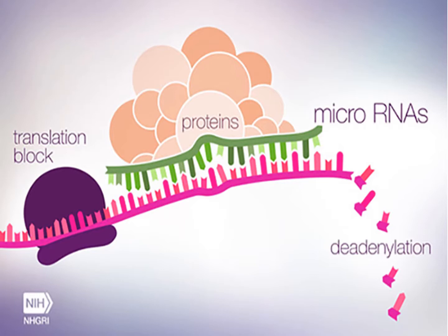The protein-coding genes that are shared or similar between various genus and species groups are actually more like the bricks and mortar of a house. What really determines their overall shape and function is the non-coding regions of the DNA, like those regions that produce microRNAs. These regions are what comprise the primary blueprint of the organism, not the protein-coding genes.